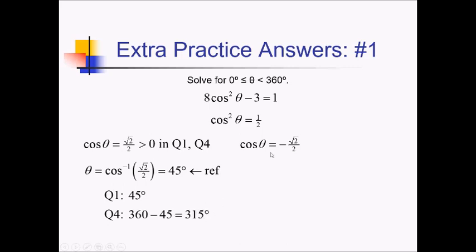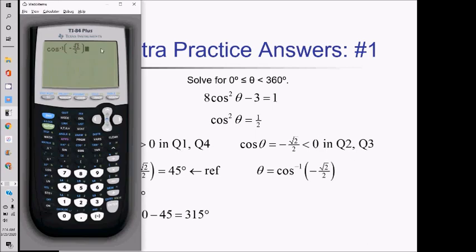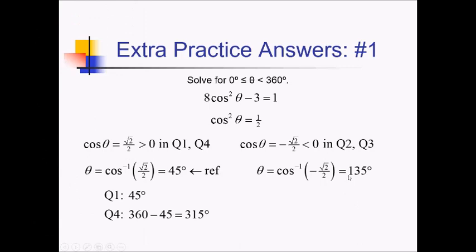Over here we have to do the other branch. Cosine is negative for this part of the solution, which means the angles coming from this branch are going to be to the left of the y-axis, so quadrants 2 and 3. Let's get our initial calculator angle by doing inverse cosine of both sides. Plugging in this exact expression in the calculator — this should be in degrees now — this comes out to 135 degrees. Now we need to get a reference angle out of this.